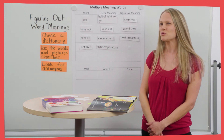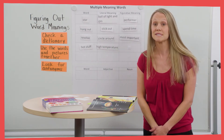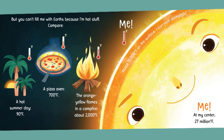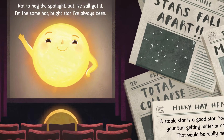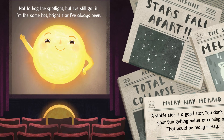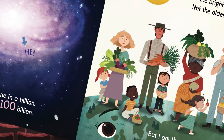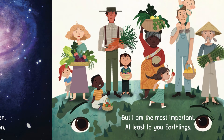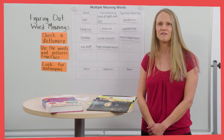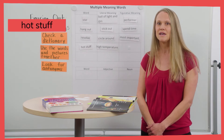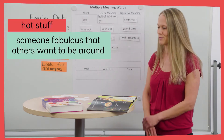The figurative meaning is a little trickier to figure out, but we can use the same strategy — using the words and pictures together to think it through. If we consider the book as a whole, we've seen over and over again that the sun is very proud of itself and knows it's extremely important. Like here, where it says directly that it is the most important, and here, where it says it's outstandingly talented and popular. This evidence helps us determine the figurative meaning of hot stuff: someone incredibly fabulous that others want to be around.